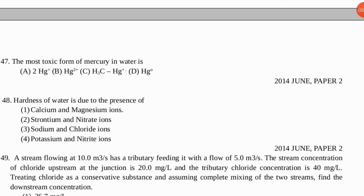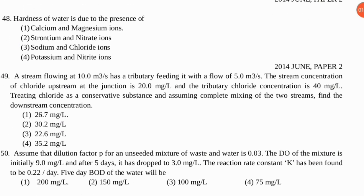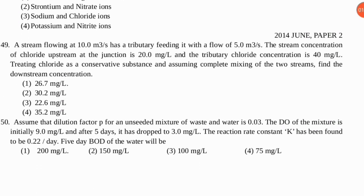Question 47: which is the most toxic form of mercury in water? We already discussed this — the correct option is C, methyl mercury. Question 48: hardness of water is due to the presence of which ions? The correct option is number one — calcium and magnesium ions cause the hardness of water.